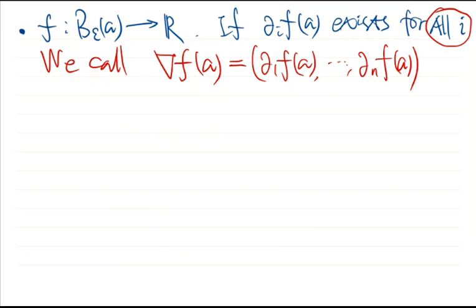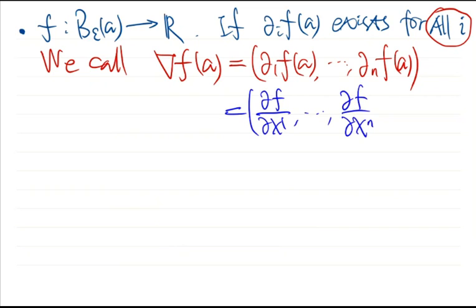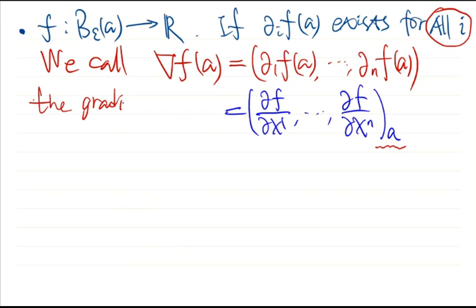This vector can also be written in classical notation as (df/dx1, ..., df/dxn), where we indicate that all partial derivatives with respect to x1 through xn are taken at point A. This vector is called the gradient of f at point A.